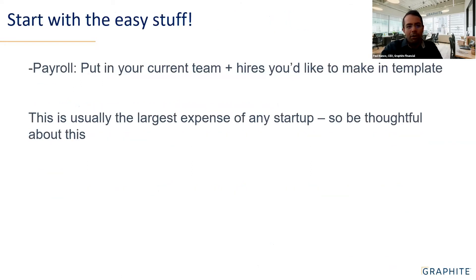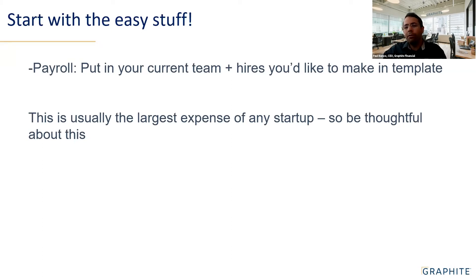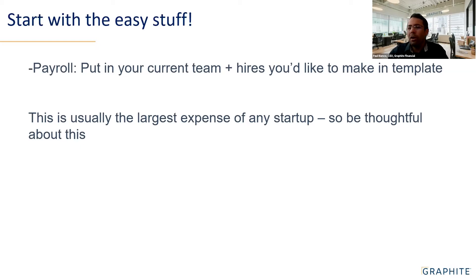Back to the model — our template and others usually have a payroll tab. You put your team in, the people you want to hire. For most companies outside of consumer, the biggest expense is personnel. For a pre-revenue company, that alone gets you very close to what your burn is going to be. Then you add other expenses — co-working space, rent, other items. Just doing payroll and people gets you about 80% of the way there.